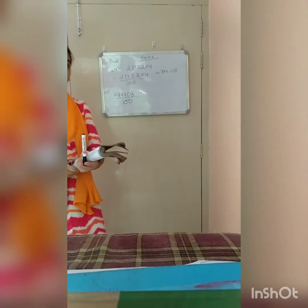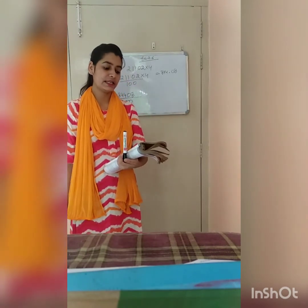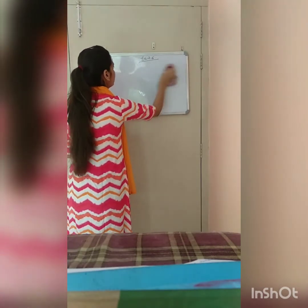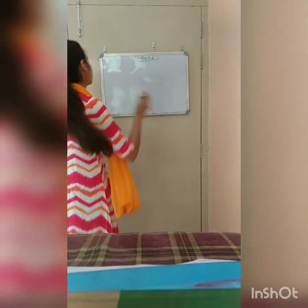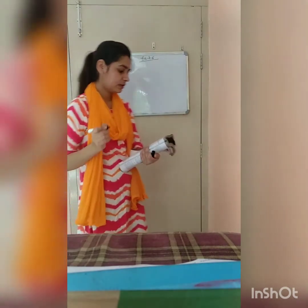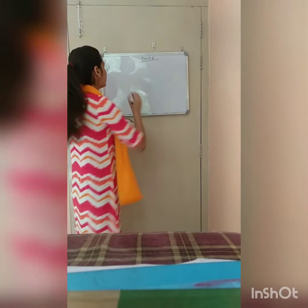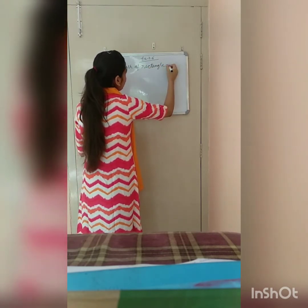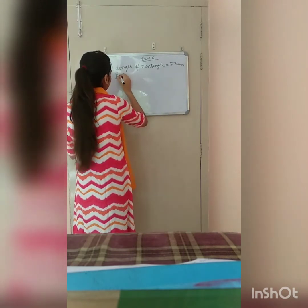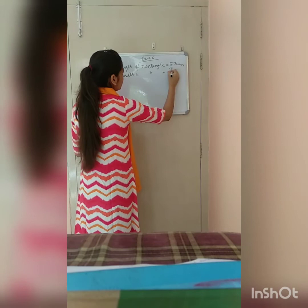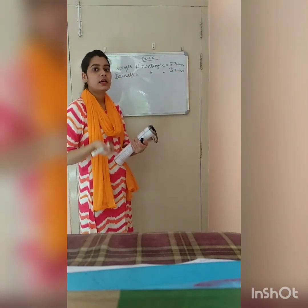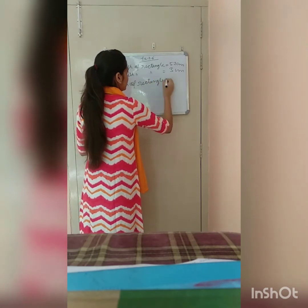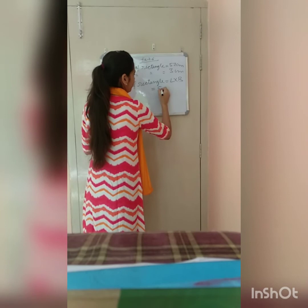Question number 2: Find the area of a rectangle whose length is 5.7 cm and breadth is 3 cm. We have given: length of rectangle is 5.7 cm and breadth of rectangle is 3 cm. We have to calculate the area of the rectangle. Area of rectangle is length into breadth, so it is 5.7 into 3.